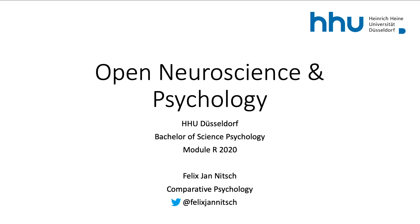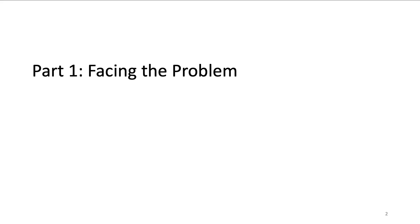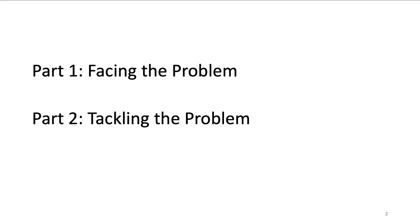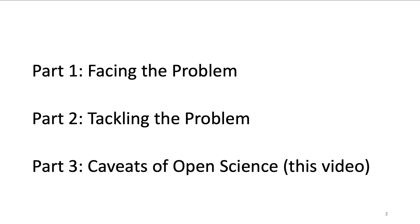Hello folks, Felix here from Heinrich Heine University Düsseldorf. In this video series we are going to talk about open science in the field of neuroscience and psychology. The series consists of three parts. In the first part we talked about the problems in conventional science and our motivation to engage with open science. In the second part we talked about practical measures which we can take as individuals and as a community to make science open. In this video we are going to address some caveats of open science and take a more critical perspective.